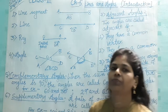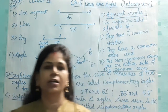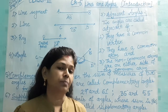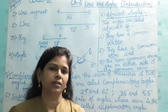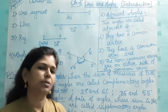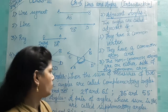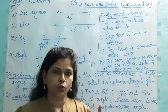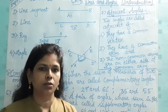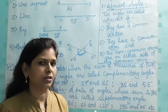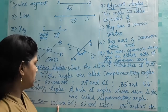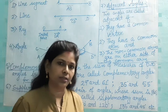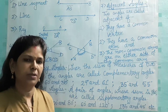Next is supplementary angles. When the sum of a pair of angles is 180°, then they are supplementary angles. For example, 100° and 80° — their sum is 180°, therefore they are supplementary angles.